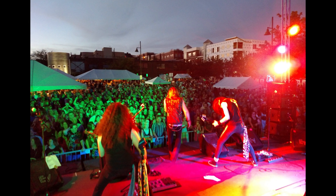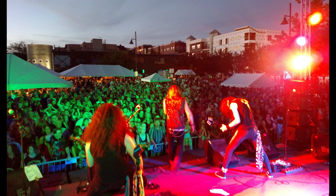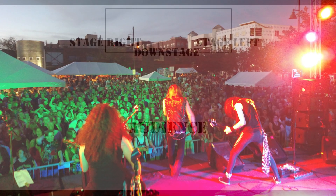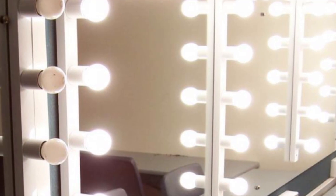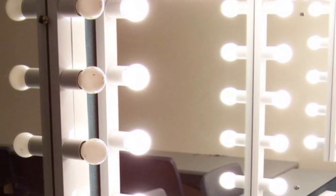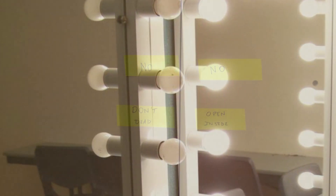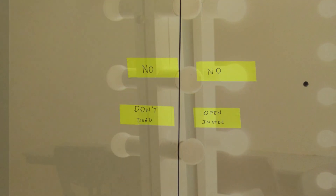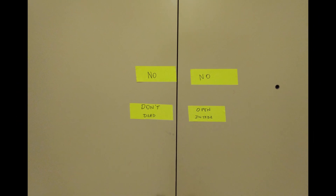The next two frequently used terms are upstage and downstage. Downstage is the area of the stage closest to the audience. Upstage is the opposite. You might be tempted to call that the back of the stage, but backstage means something entirely different — backstage is where the green room, dressing rooms, and equipment storage are. Backstage is not part of the performance area and is not visible to the crowd.